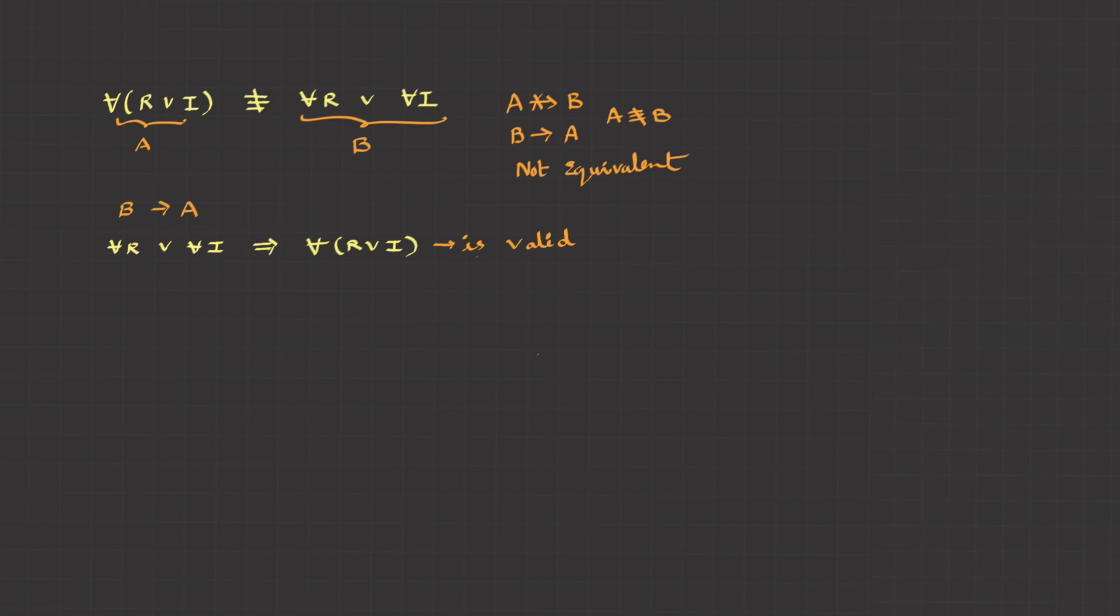On the same lines there exist R and I logically implies there exist R and there exist I. You can test it. Some are rich and intelligent. But the other way round is not correct. Some are rich and some are intelligent does not imply some are both rich and intelligent. So it's not equivalent but we can say this is logically valid.